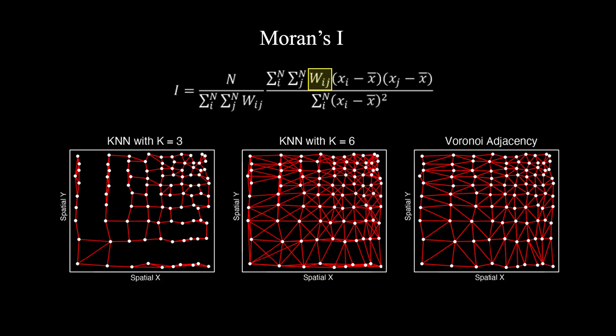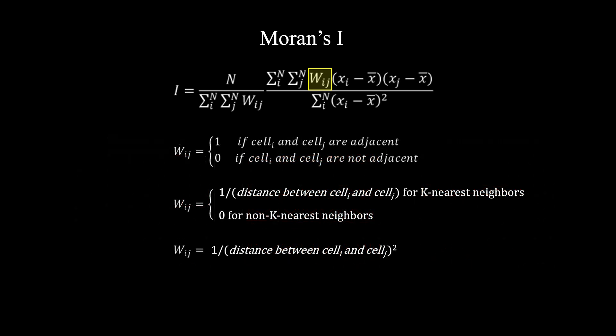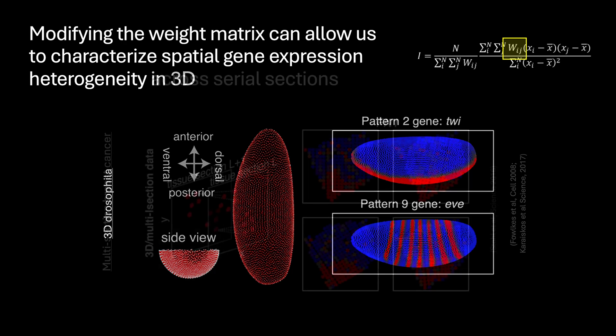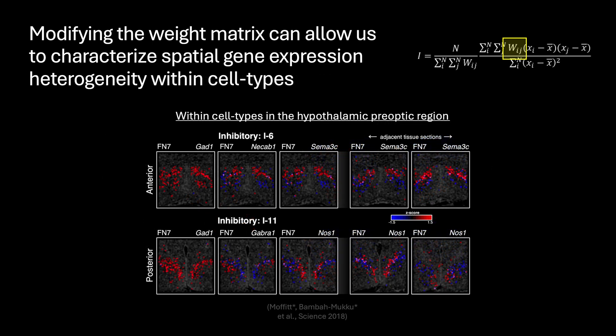Although we have thus far considered W_IJ to be a binary adjacency weight matrix based on Voronoi tessellation, there are many other ways we could define whether two cells are adjacent. For example, we can consider two cells as adjacent if they are within the k nearest neighbors — visualized are examples with k equals 3 and k equals 6. Likewise, W_IJ doesn't need to be binary; it could scale with the inverse distance between two cells, perhaps linearly or even quadratically. In our manuscript, we further demonstrate how modifying the weight matrix can allow us to characterize spatial gene expression heterogeneity in 3D across serial sections, as well as within cell types by restricting the evaluated cells to only those of a particular cell type.